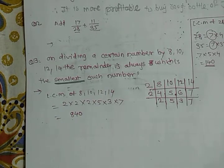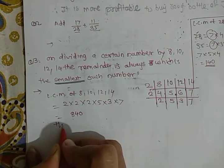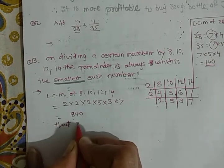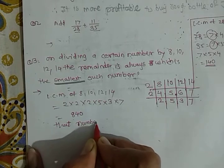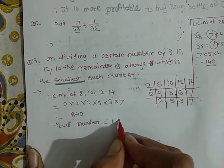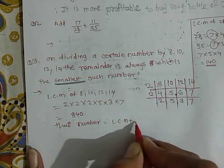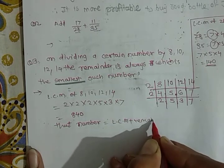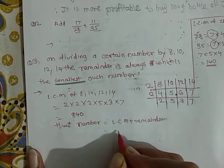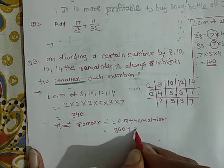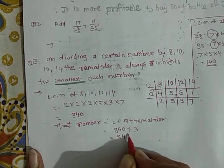To the LCM we add the remainder obtained every time, so that number equals LCM plus remainder. So 840 plus 3, that number is 843.